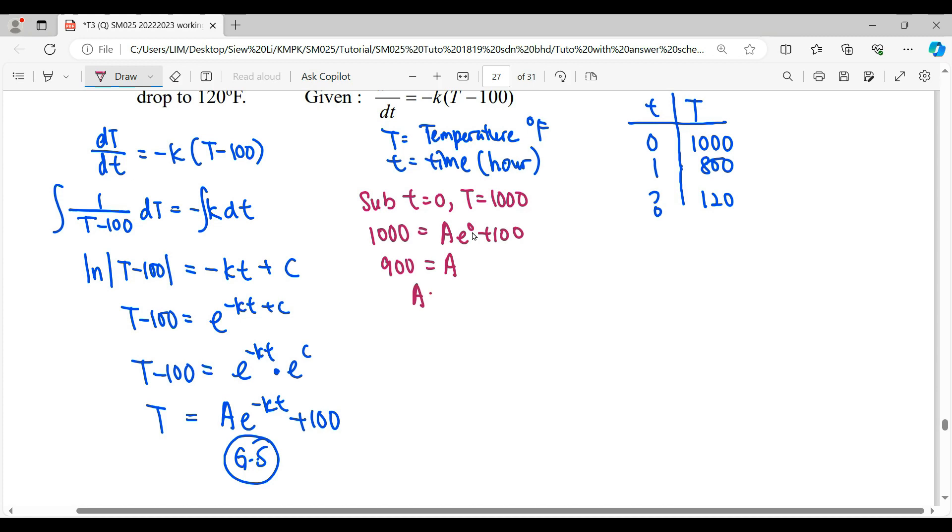Second information is substitute t equals 1 and temperature is 800. A we already found, which is 900, times e to the negative K times t, t is 1, so negative K, plus 100. Then we simplify, move this 100, becomes 700.